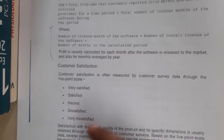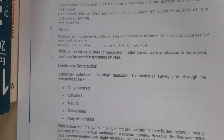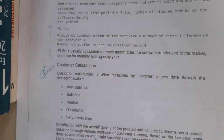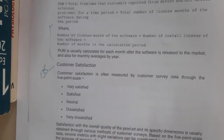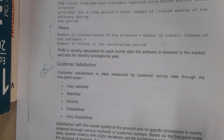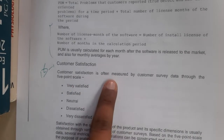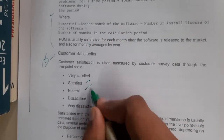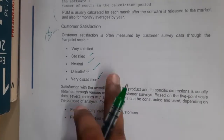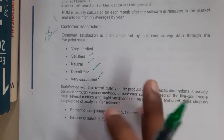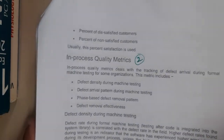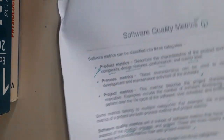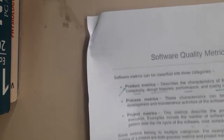Customer satisfaction is measured by customer surveys through a five-point scale: very satisfied, satisfied, neutral, dissatisfied, and very dissatisfied — similar to reviews given for food or Amazon deliveries. Based on these percentages, various quality factors are determined.